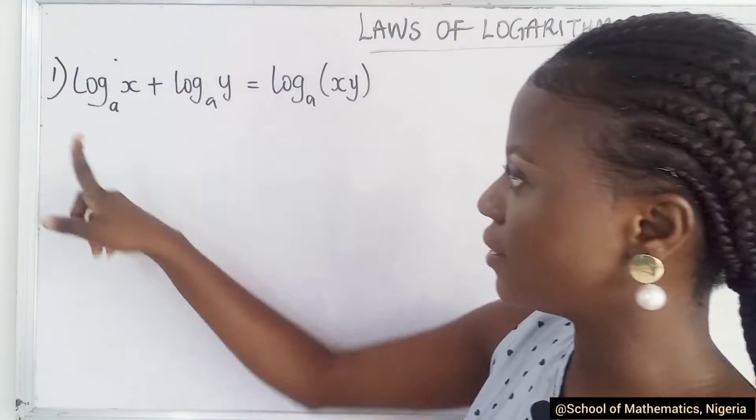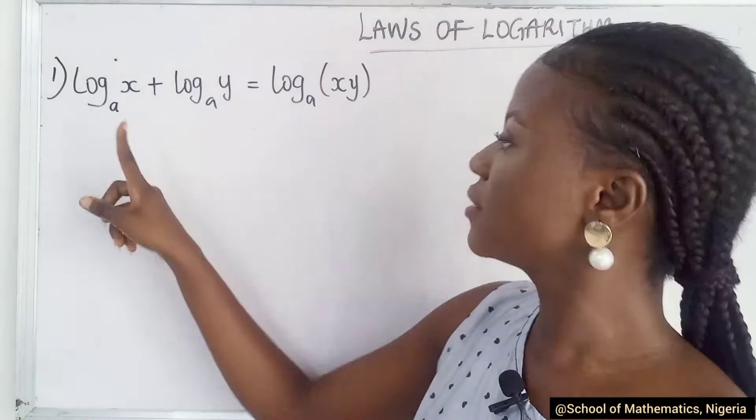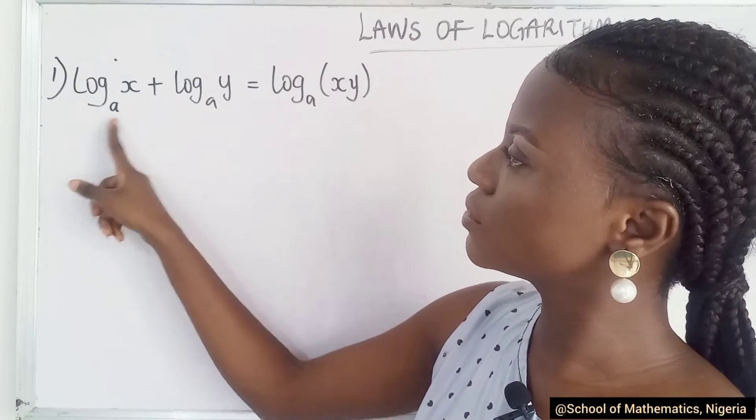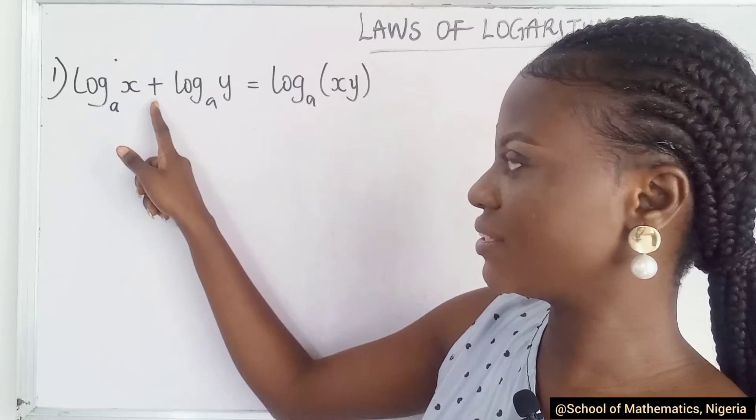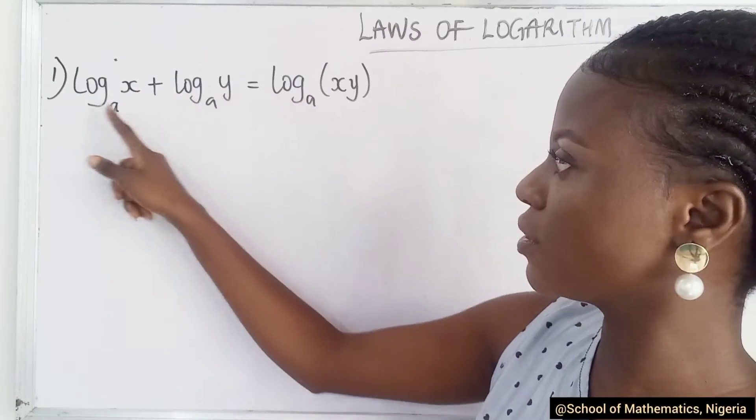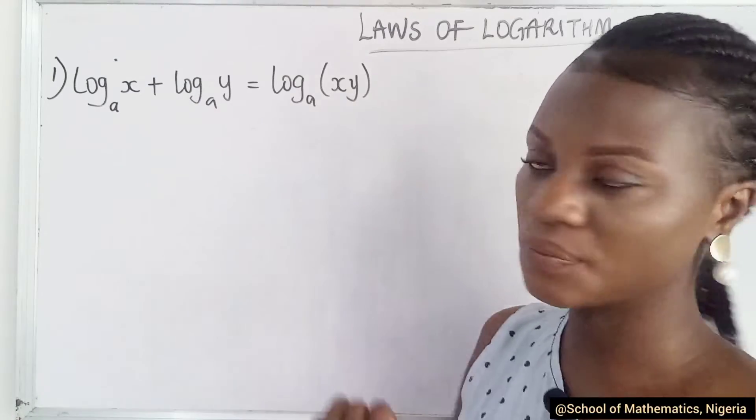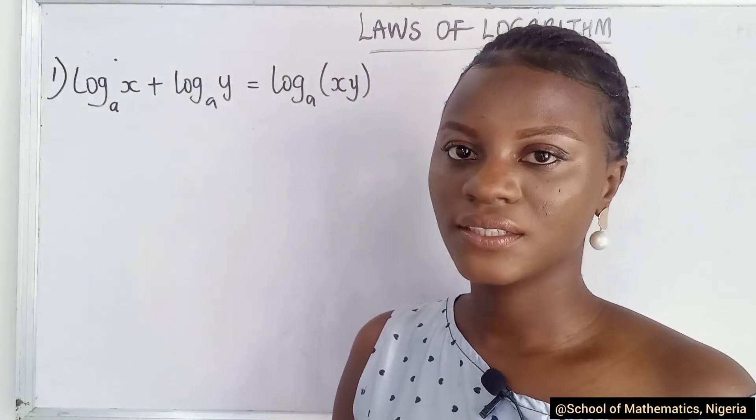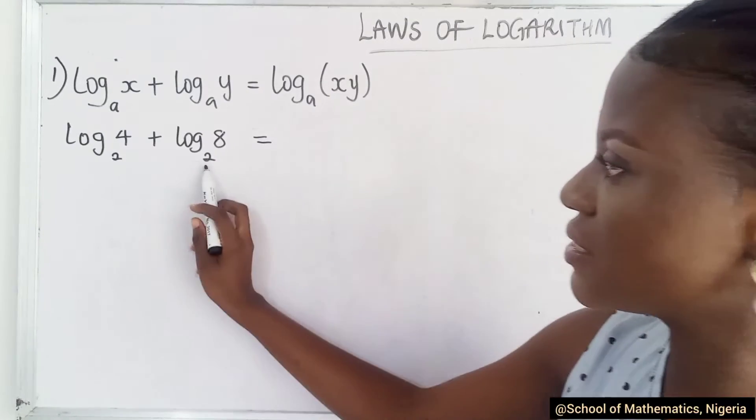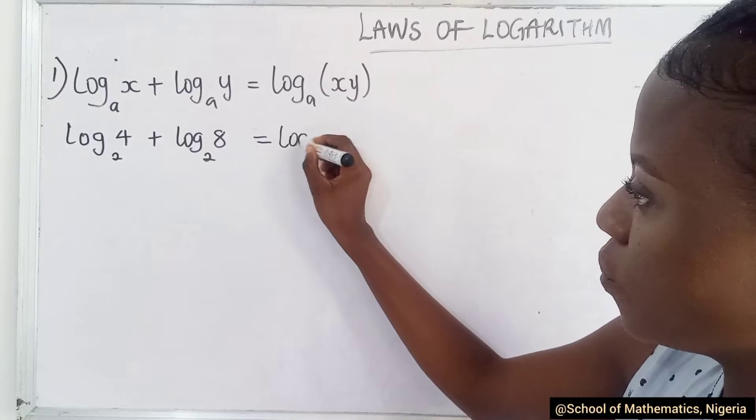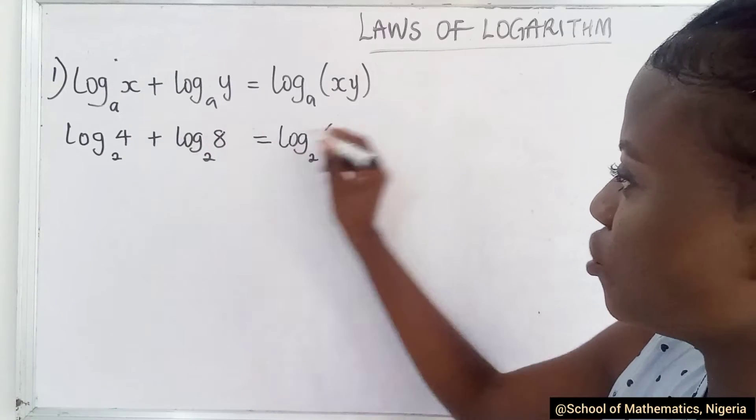So now the first one is this rule, which can also be called the product rule. Given the log to the same base of numbers, when there's an addition sign, what do you do? You pick the common log, one of it, and then you multiply together. Let's give an example so you'd understand. It says when you have the same base, you pick one of it, and then you multiply because of the addition sign.